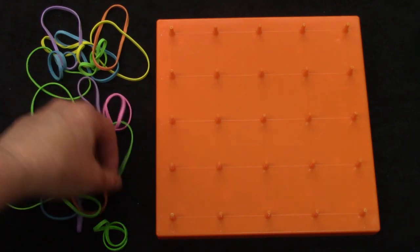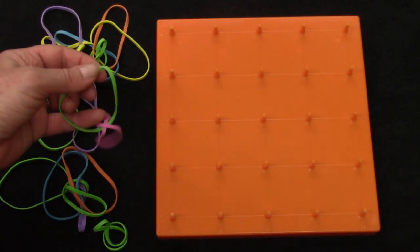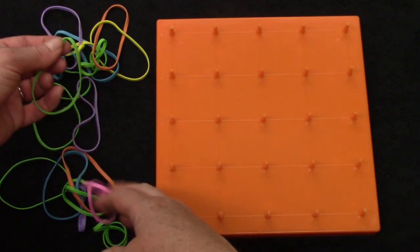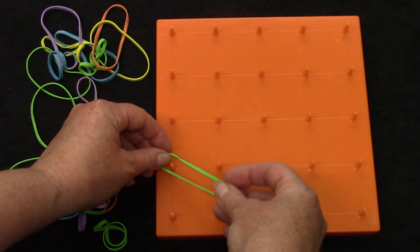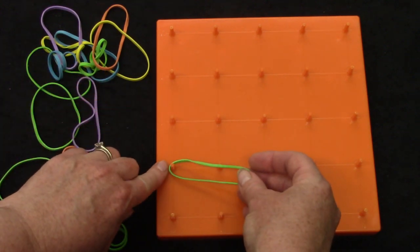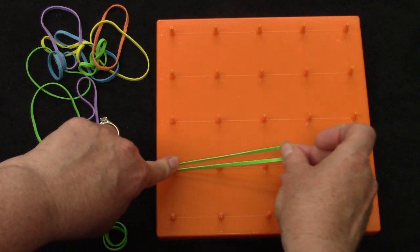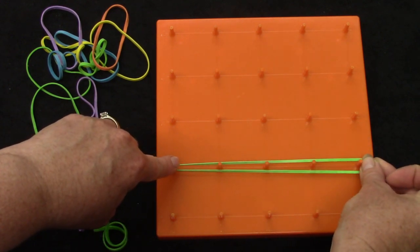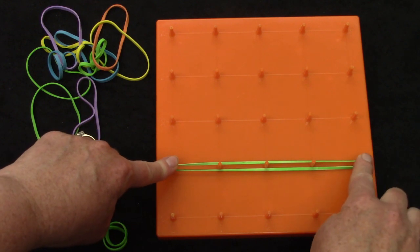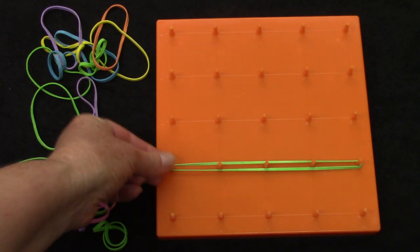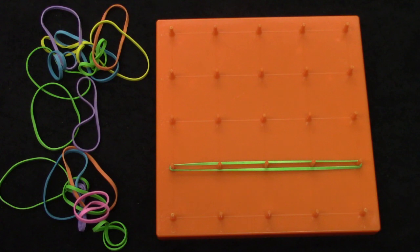First we're going to review how we use the rubber bands on the geoboard. When we are placing a rubber band on the geoboard we put our finger down on one side as we stretch it across to the other side so that the elastic band does not fly off and hit anyone.